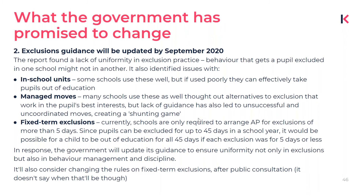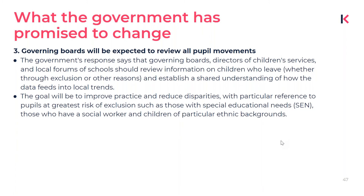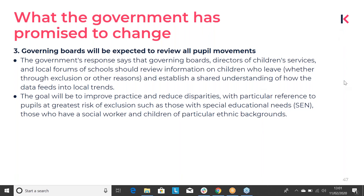Another promise will have a direct impact on governing boards: governing boards will now be expected to review all pupil movements. Currently, governing boards review exclusions in terms of numbers and behavior management. But now, governing boards, directors of children's services, and local forums of schools will be expected to review information on pupils who leave — regardless of whether that was through exclusion or otherwise — and establish a shared understanding of how that data feeds into local trends, in order to improve practice and reduce disparities.